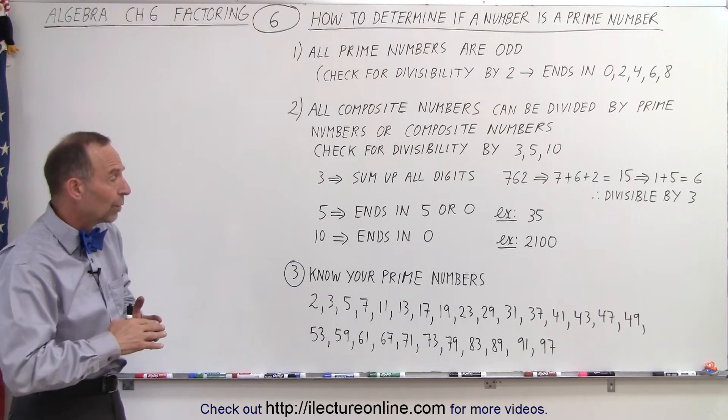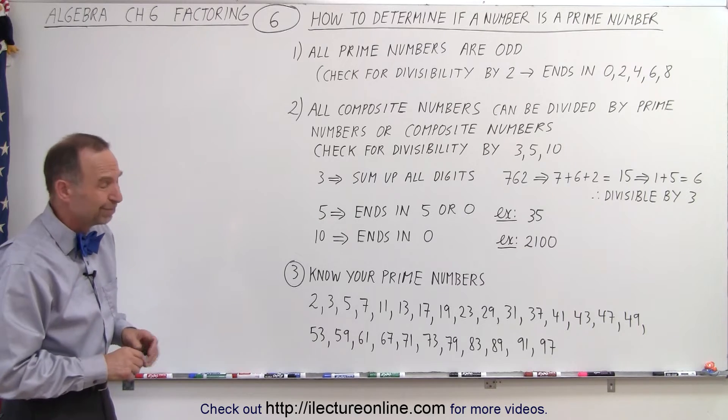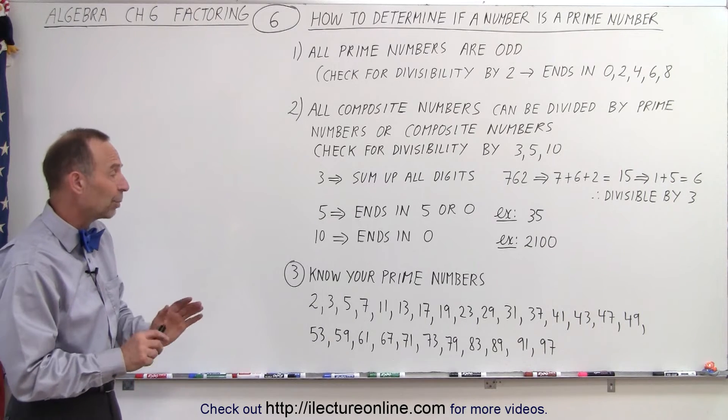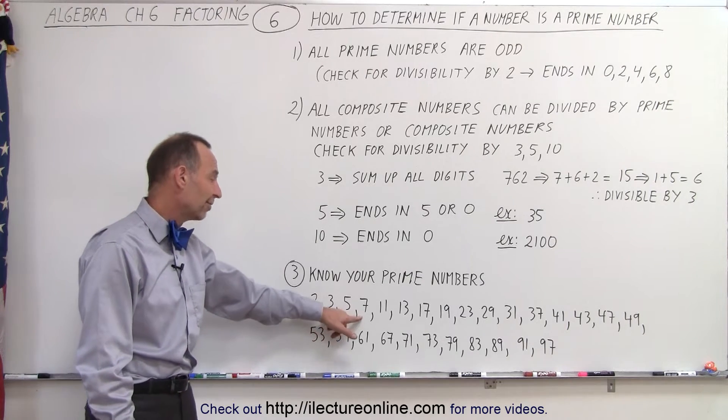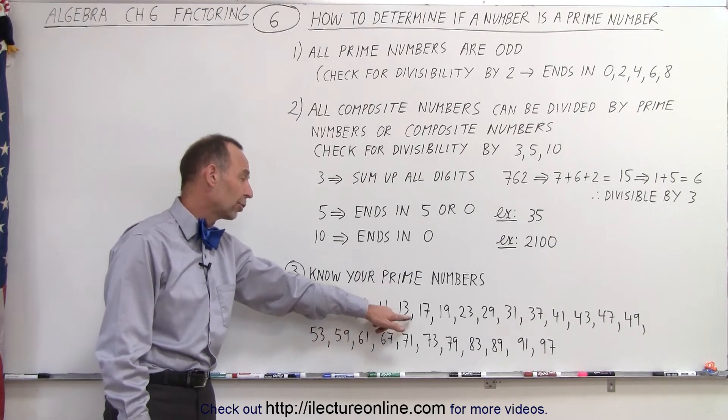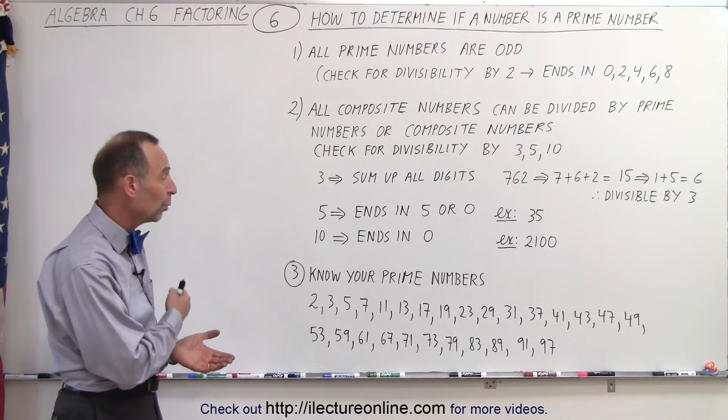Then it's also a good idea to have memorized some of the prime numbers, maybe all the way up to 100. I know that might seem like a big task, but after a while you kind of see the pattern. We already know that 2, 3, 5, and 7 are prime numbers, so is 11 and 13 and 17 and 19. So those are the prime numbers between 1 and 20.